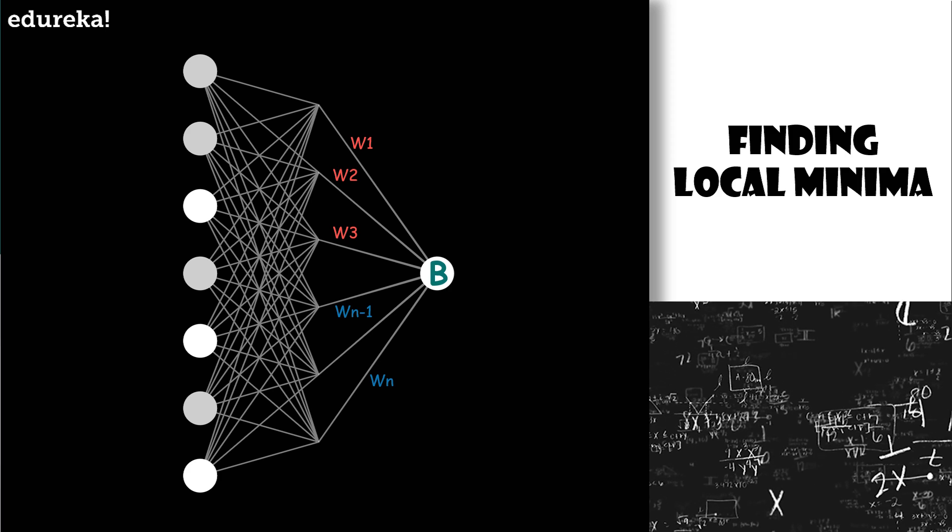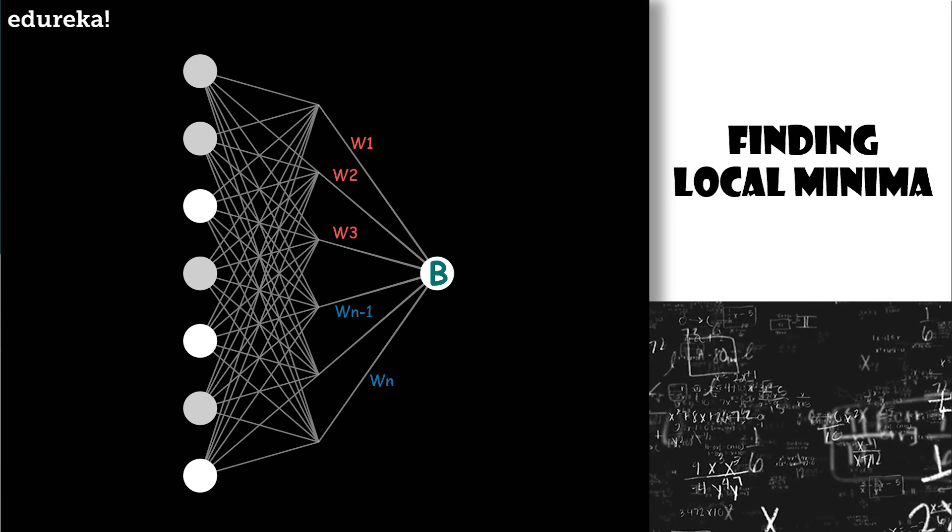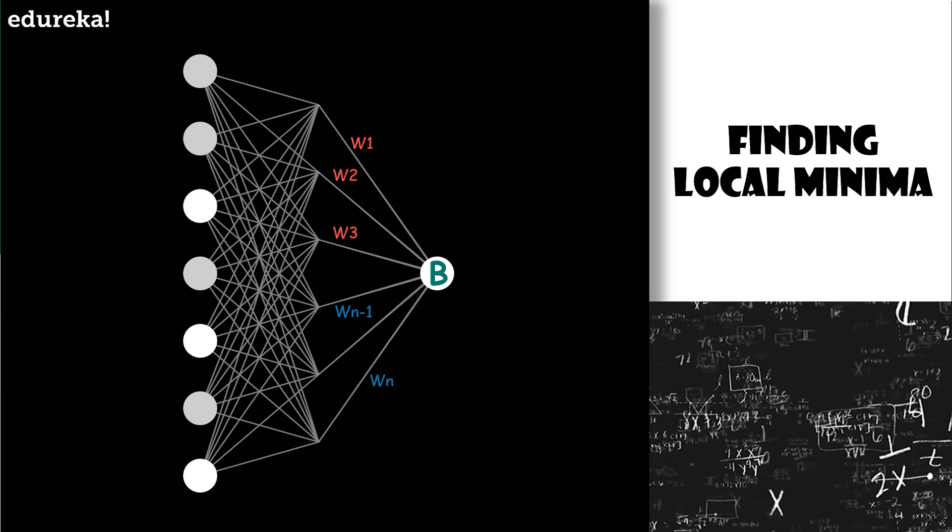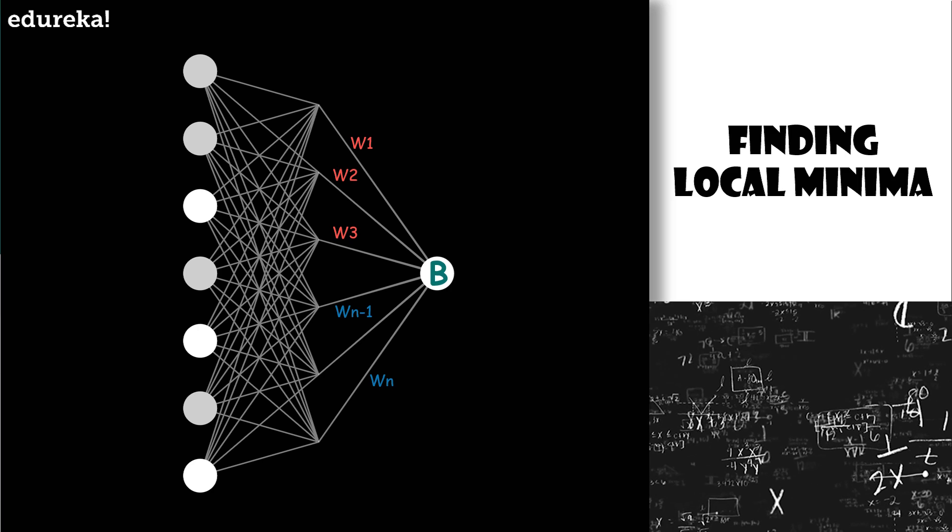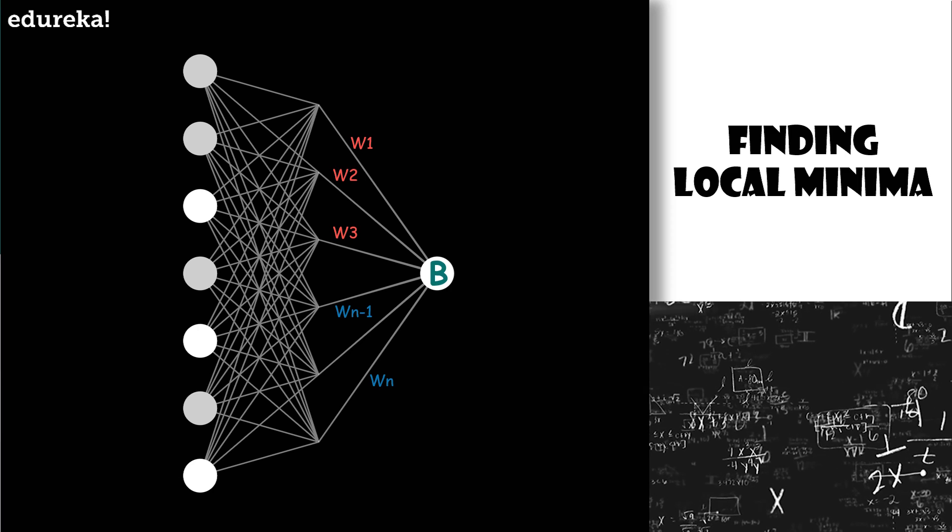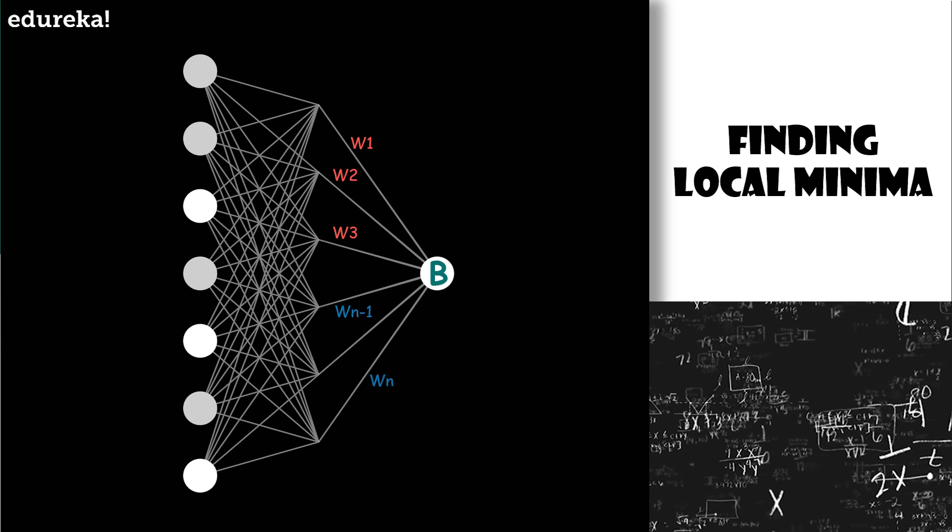For the most part, making changes to the weights and biases won't cause any change at all in the number of training images classified correctly. That makes it difficult to figure out how to change the weights and biases to get improved performance. If we instead use a smooth cost function like the quadratic cost, it turns out to be easy to figure out how to make small changes in weights and biases so as to get an improvement in the cost.